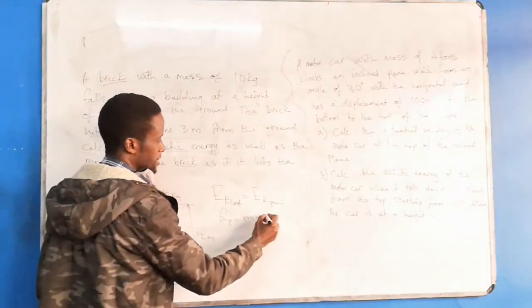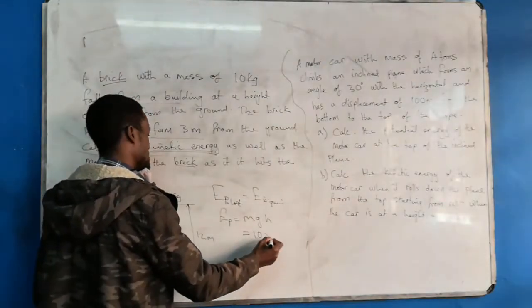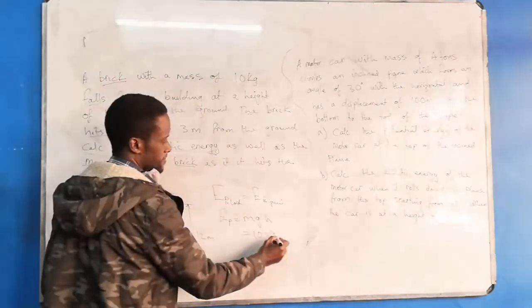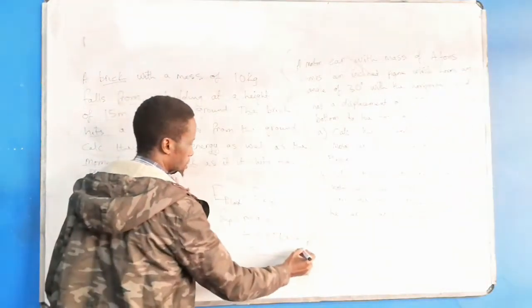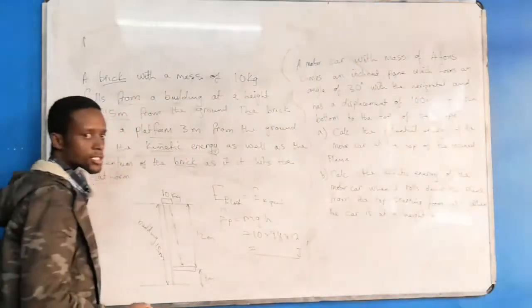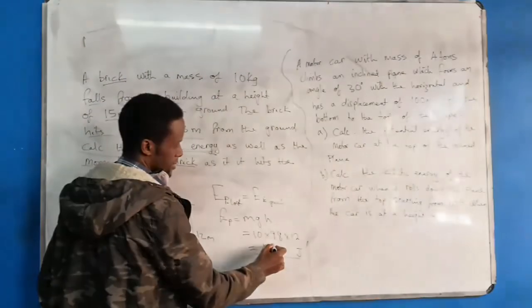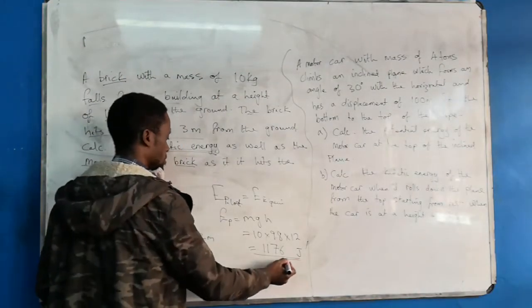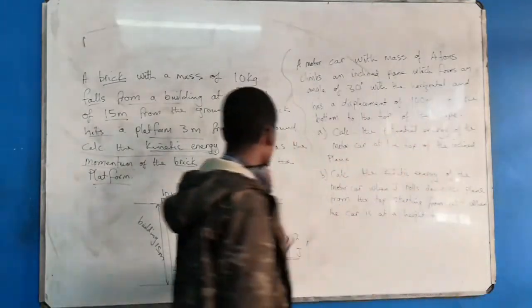So your EP that is lost is mass and gravity and the height. It's a vertical height. Your mass is 10 kg, gravity is 9.8, you have 12. You get your kinetic energy, which is the potential energy. How much? 1176 joules. That is your kinetic energy.